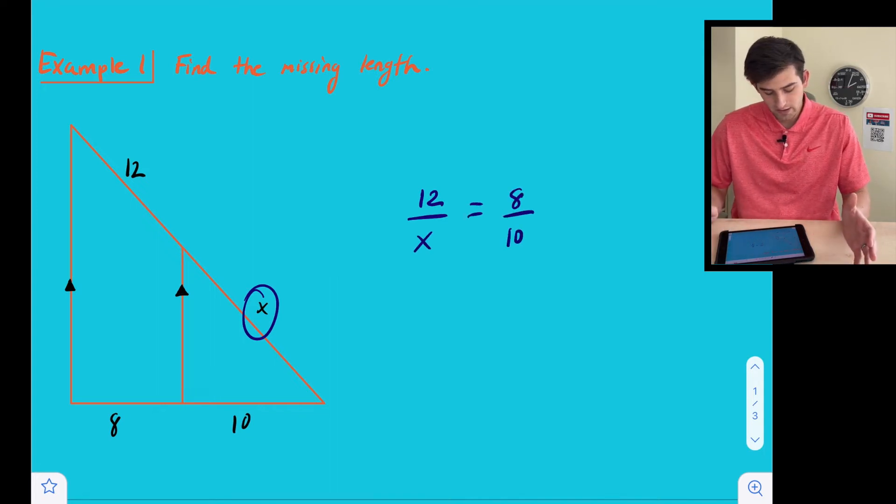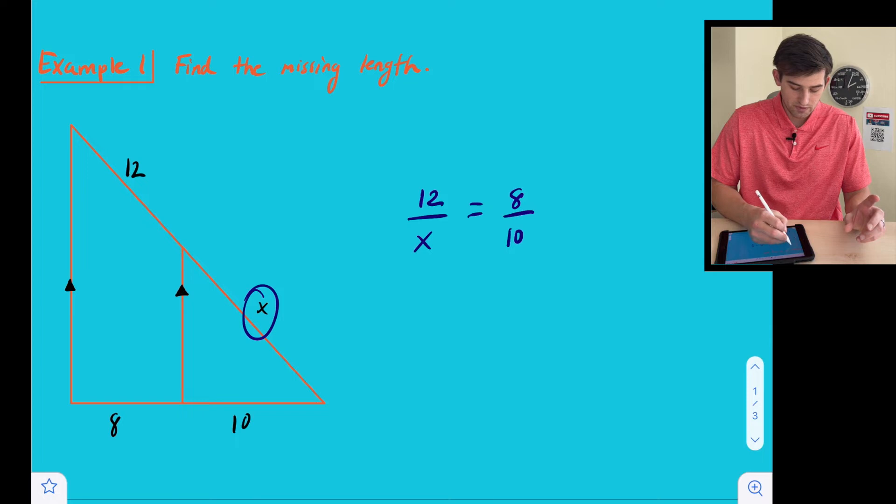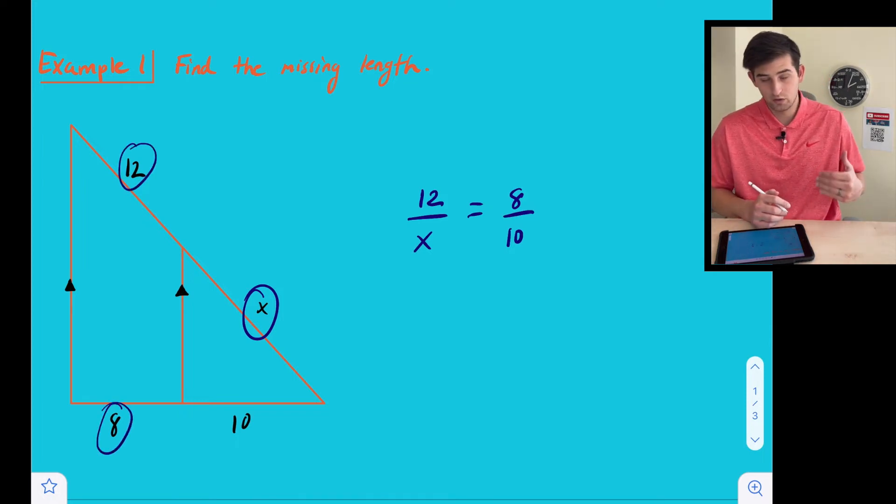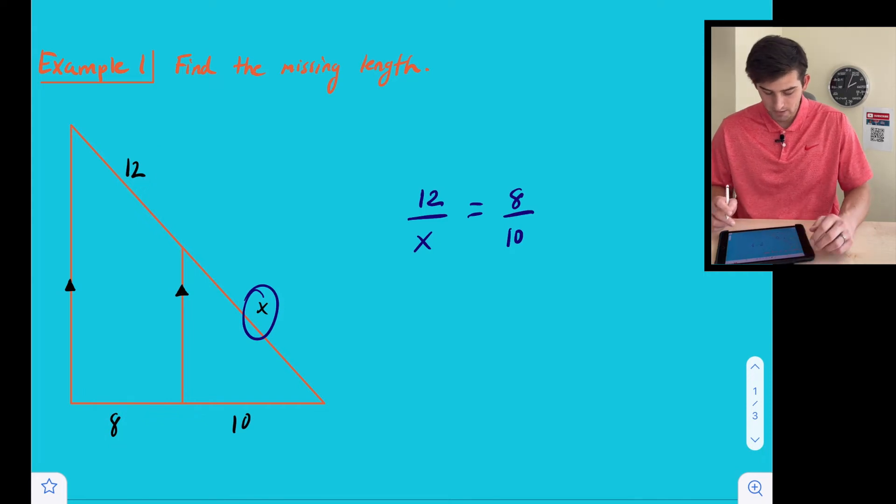So we did 12 and we did X, right? That part really doesn't matter, you could do X over 12, that's fine. But since we started with 12, we need to start our second fraction with the corresponding side, which would be 8 right there. All right, so this was 10.